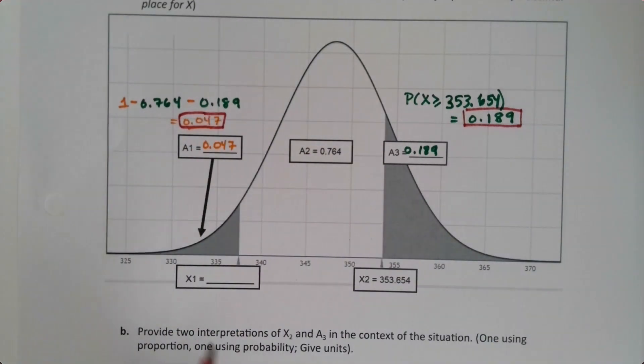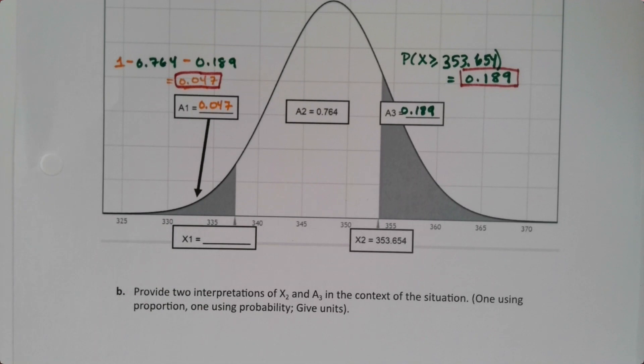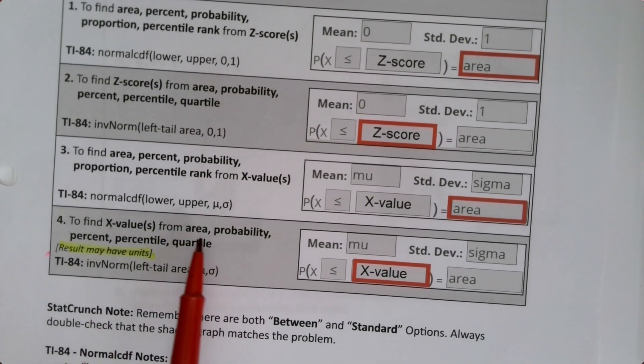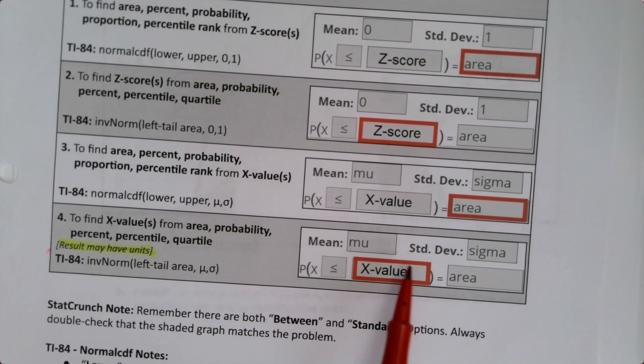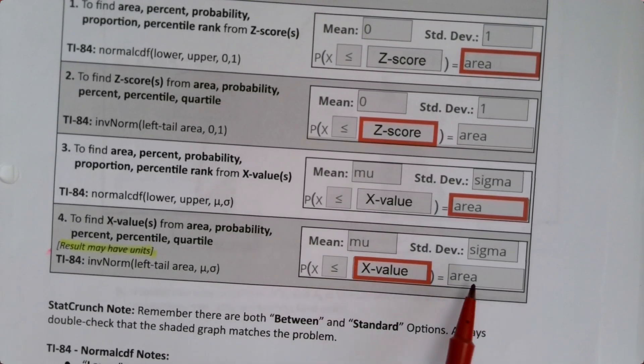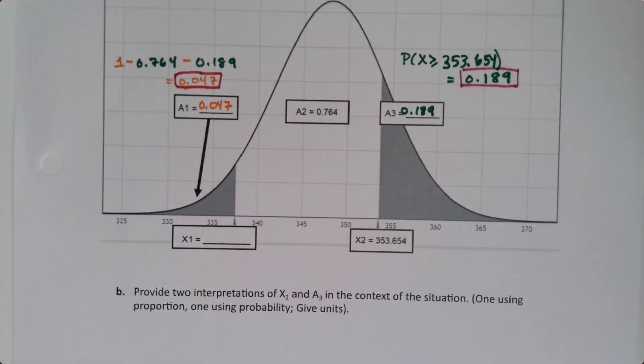So now what about this x value? Well going back, if I want to find an x value from an area, the x value is the part that I'm going to find. So that's got the red box. So I'm going to put the area in. But this time I do want to face left because I'm talking about a left tail area.